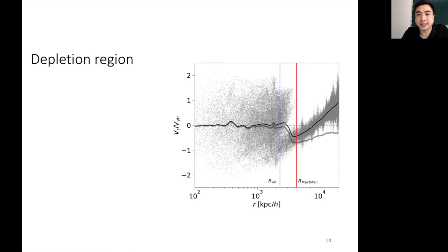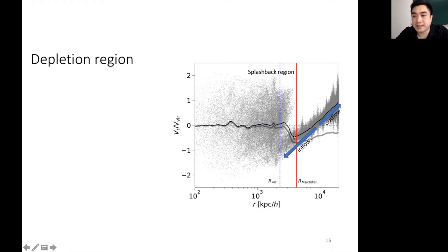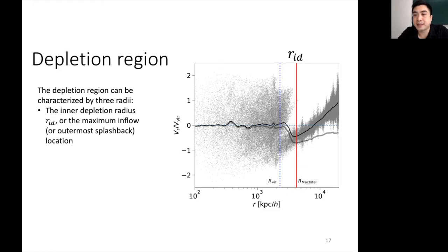Another picture for the depletion region is shown here, where I plot radial velocities versus position for individual particles around a halo. Negative radial velocities indicate particles flowing towards the halo center, while positive values indicate particles overcome by the Hubble flow and moving away. The splashback region is also visible here. The vertical line is the maximum infall location, and the dotted blue line is the theoretical virial radius. The maximum infall location marks the inner edge of the depletion region — we call it the inner depletion radius. This radius marks the edge of the halo quite well because it separates outflowing matter from inflowing matter, and we believe it could be a strong candidate for halo exclusion and halo modeling.